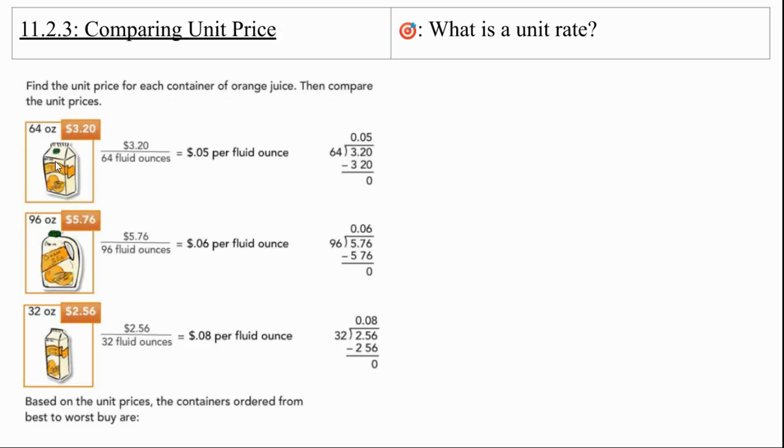Now we're going to be comparing unit prices. So you're going to find the unit price of each container of orange juice, then compare the unit prices. So the price on the first one, the 64 ounce container is $3.20 for 64 ounces. We would do that division and get 5 cents per fluid ounce. The second one is 96 ounces for $5.76. And so we would have $5.76 over 96, and we would get 6 cents per fluid ounce. And the third one is 32 ounces of orange juice for $2.56, which would give us 8 cents per fluid ounce.